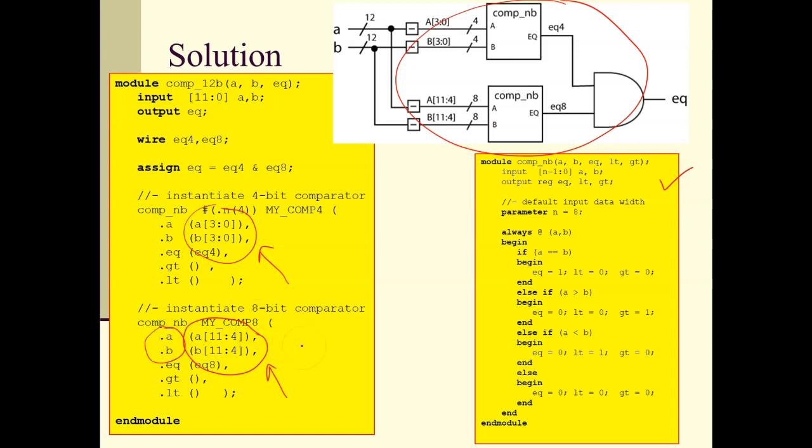This is an 8-bit comparator here. It defaults to 8-bit because the parameter is 8. This is a 4-bit comparator which I override. I override the parameter with that little declaration right there in the instantiation, and I've mapped it correctly.